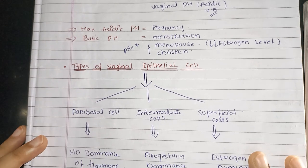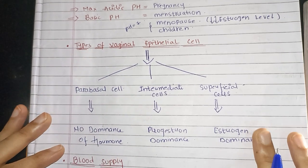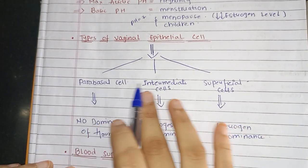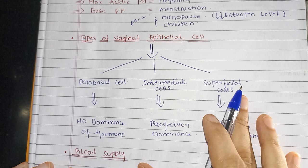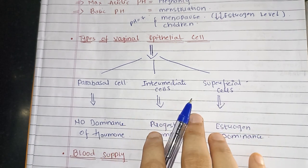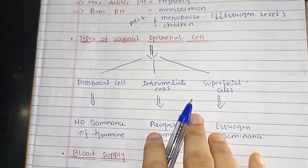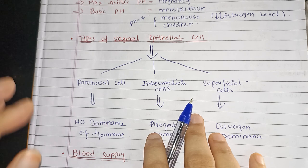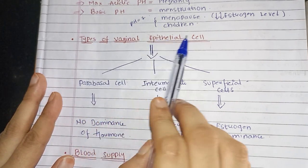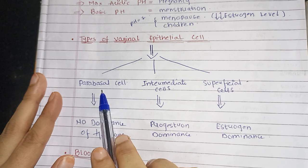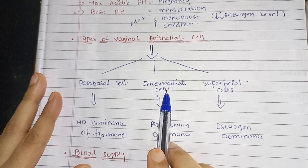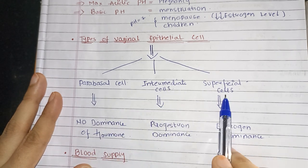Now, the types of vaginal epithelial cells. You can exclude this, but it will help you in the PG examination — it is a PG point question. There are three types of cells: parabasal cells, intermediate cells, and superficial cells.